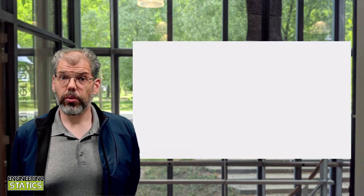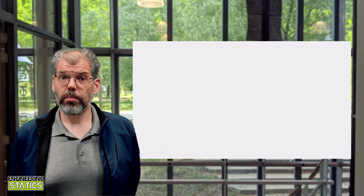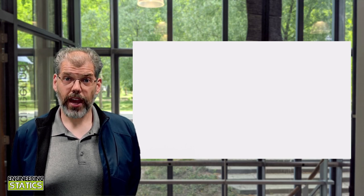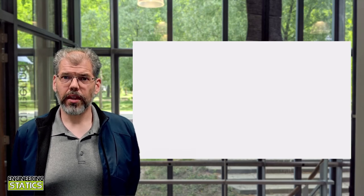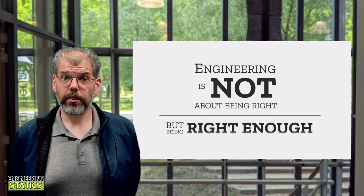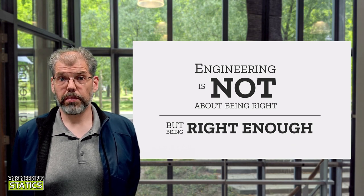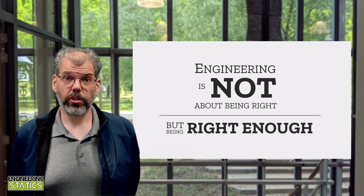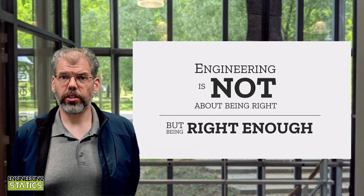This is where I need to tell you a big secret about engineers. Engineers are not concerned about being right. In fact, I would argue that engineers are never right. But that's okay, because engineering is not about being right, but being right enough. We will make assumptions and simplifications that make our results ultimately wrong, but right enough to be useful in our design process.